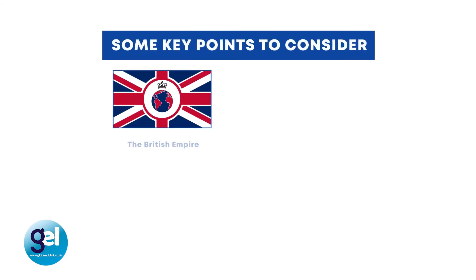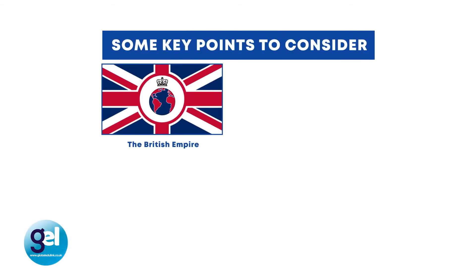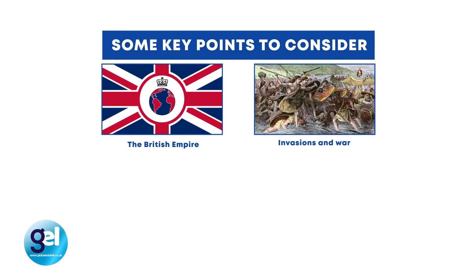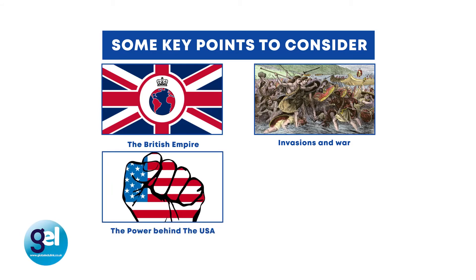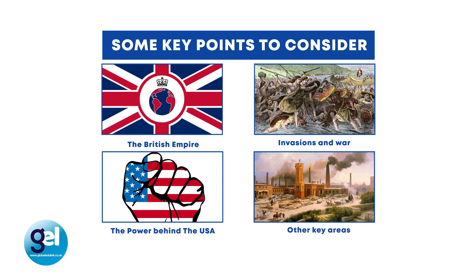Key points to consider: the British Empire and how it helped spread English globally. Invasions and war, and how military personnel such as soldiers and sailors helped spread English. The power behind the United States of America — there was a huge boom in the economy in America at the end of World War II which helped shape English as a global language. Because of trade to and from other countries, a single language was necessary. Other key areas include scientific, economic, financial and industrial factors like the rise of the Industrial Revolution.